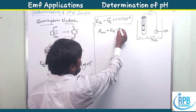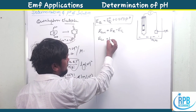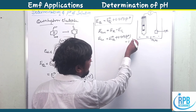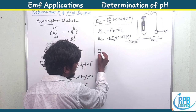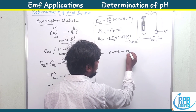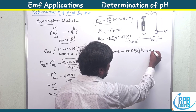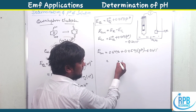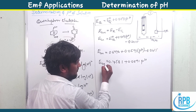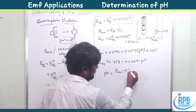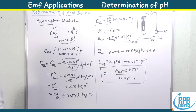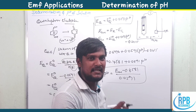E cell = E right − E left = (E°Q + 0.0591 pH) − E(calomel). The standard quinhydrone electrode value E°Q = 0.6996. So E cell = 0.6996 + 0.0591 pH − 0.2415 = 0.4581 + 0.0591 pH. Rearranging: pH = (E cell − 0.4581) / 0.0591. This is the simplest method using the quinhydrone electrode.